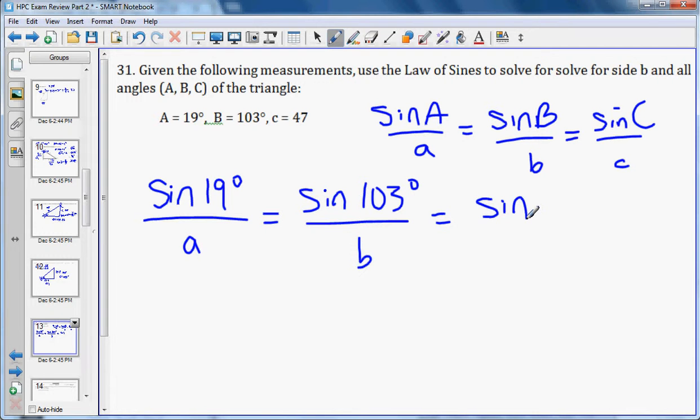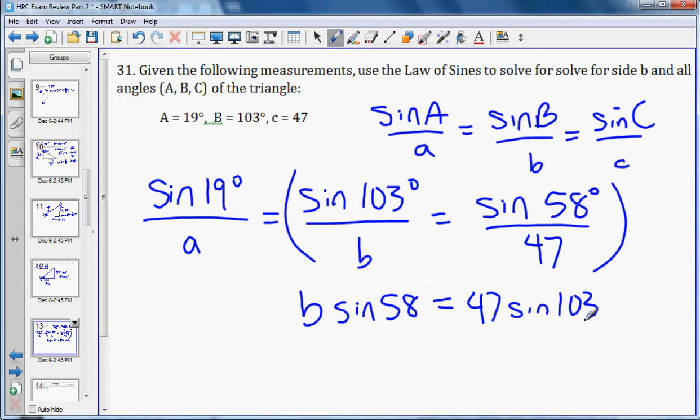From here you can cross multiply. I'll choose to do these two. We get B sine of 58 equals 47 sine of 103, and then divide both sides by the sine of 58. That will give us, once we plug it in, side B, which is actually what I asked for. I'm glad that's what I did. You get side B is 54.